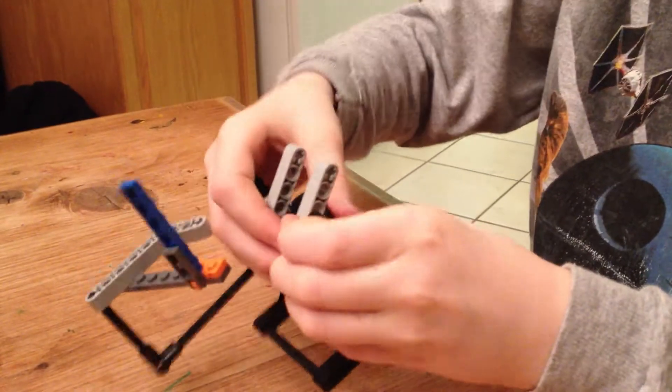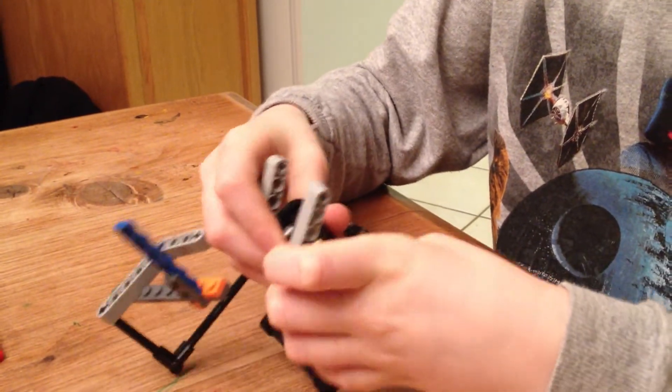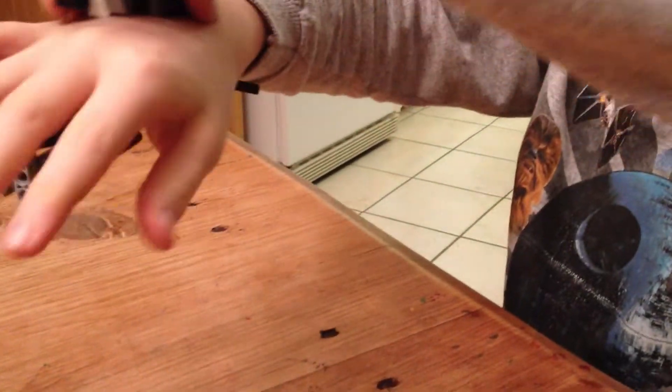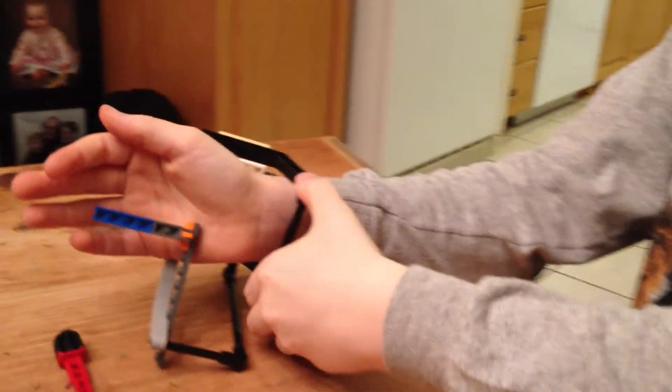And to put it on, you're going to take off one side from there, and you're going to pull it off the stick. Slide your hand on, you can place it like that. Put that on, snap it together.